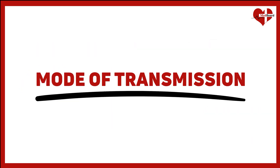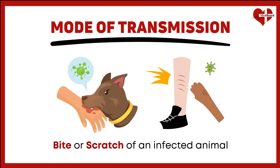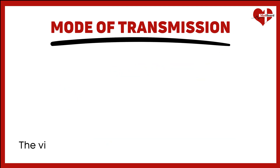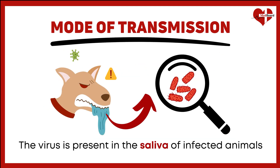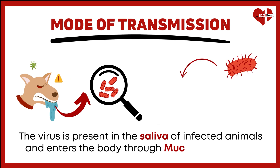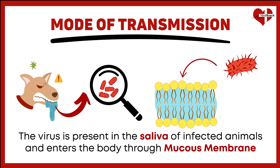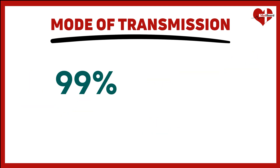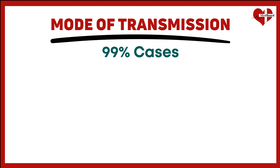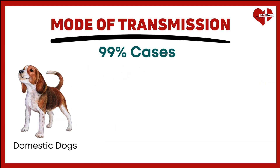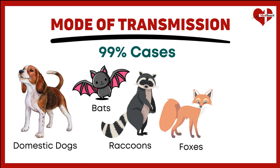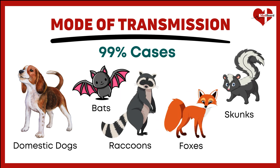The most common mode of transmission is through the bite or scratch of an infected animal. The virus is present in the saliva of infected animals and enters the body through skin breaks or mucous membranes. In over 99% of cases, rabies is transmitted by domestic dogs. However, other animals like bats, raccoons, foxes, and skunks can also be carriers.